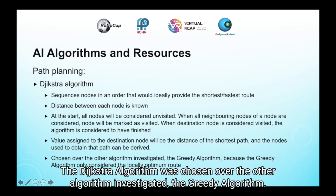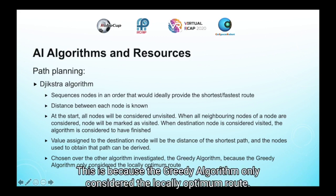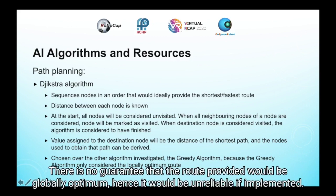The Dijkstra algorithm was chosen over the other algorithm investigated, the greedy algorithm. This is because the greedy algorithm only considered the locally optimum route. There is no guarantee that the route provided will be globally optimum, hence it would be unreliable if implemented.